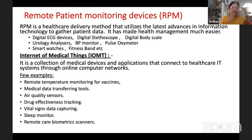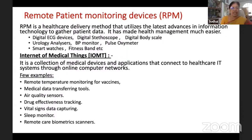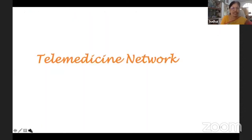Internet of Medical Things (IoMT) is a collection of medical devices and applications connected to healthcare systems through online computer networks. Examples include remote temperature monitoring for vaccines, medical data transferring tools, air quality sensors, drug effectiveness tracking, vital sign data capturing, and sleep monitoring.